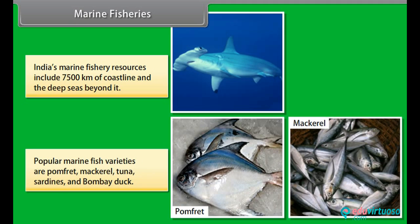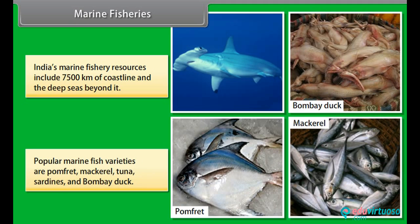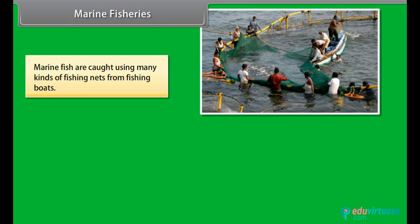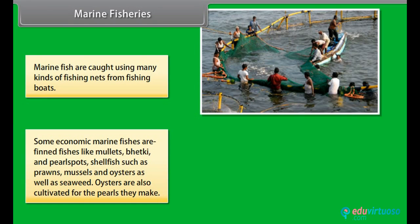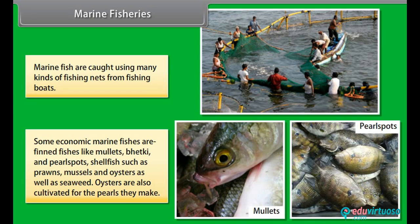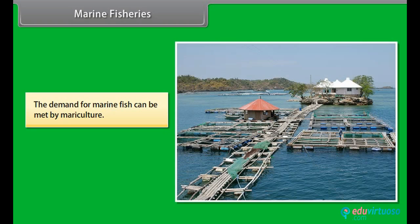Marine fish are caught using many kinds of fishing nets from fishing boats. Some economically important marine fishes include finned fishes like mullets, bhetki and pearl spots; shellfish such as prawns, mussels and oysters; as well as seaweed. Oysters are also cultivated for the pearls they produce. The demand for marine fish can be met by mariculture.